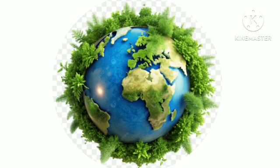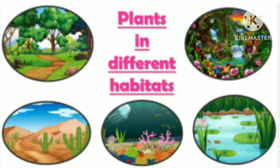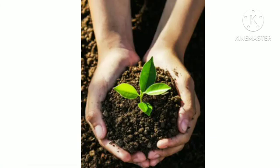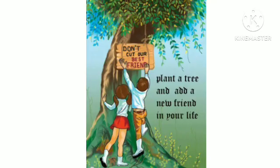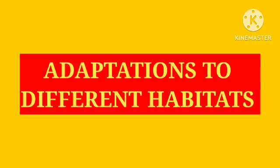Plants grow almost everywhere on the earth. Some plants grow on land while some in water. They differ greatly in their habitats. Thus, they show adaptations that help them to live and grow in their particular habitats.